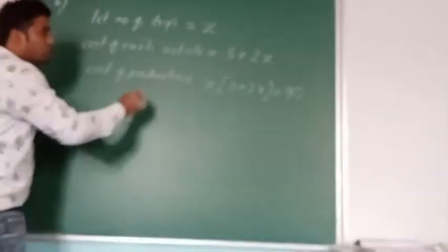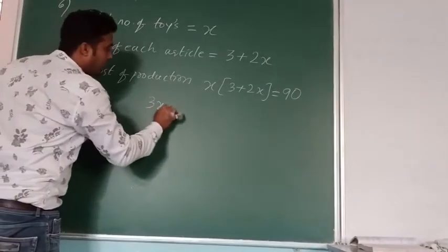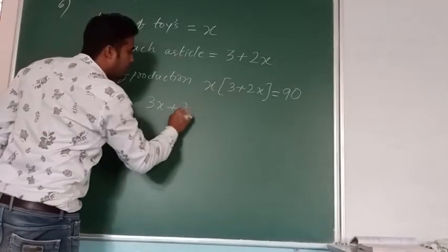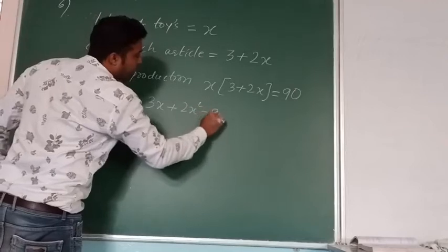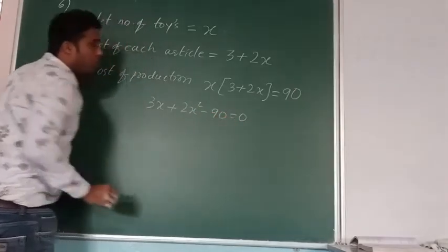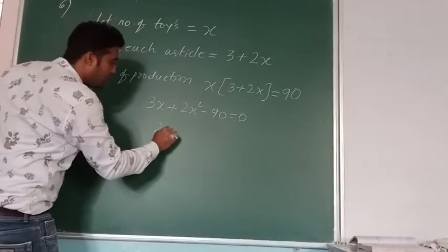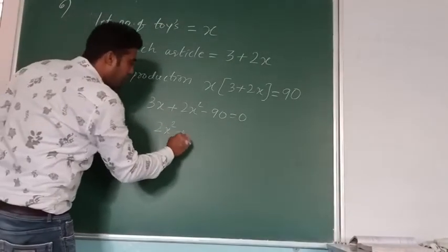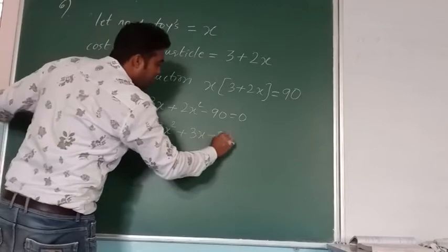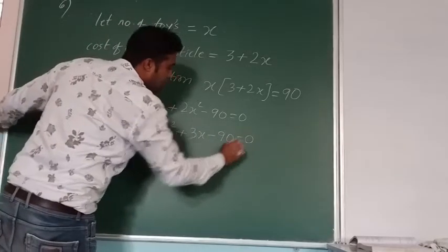Next, what we have to do? We have to solve that. This becomes 3x plus 2x into x. It becomes 2x squared plus 3x minus 90 equals 0. Let me arrange in proper form. That becomes 2x squared plus 3x minus 90 equals 0.